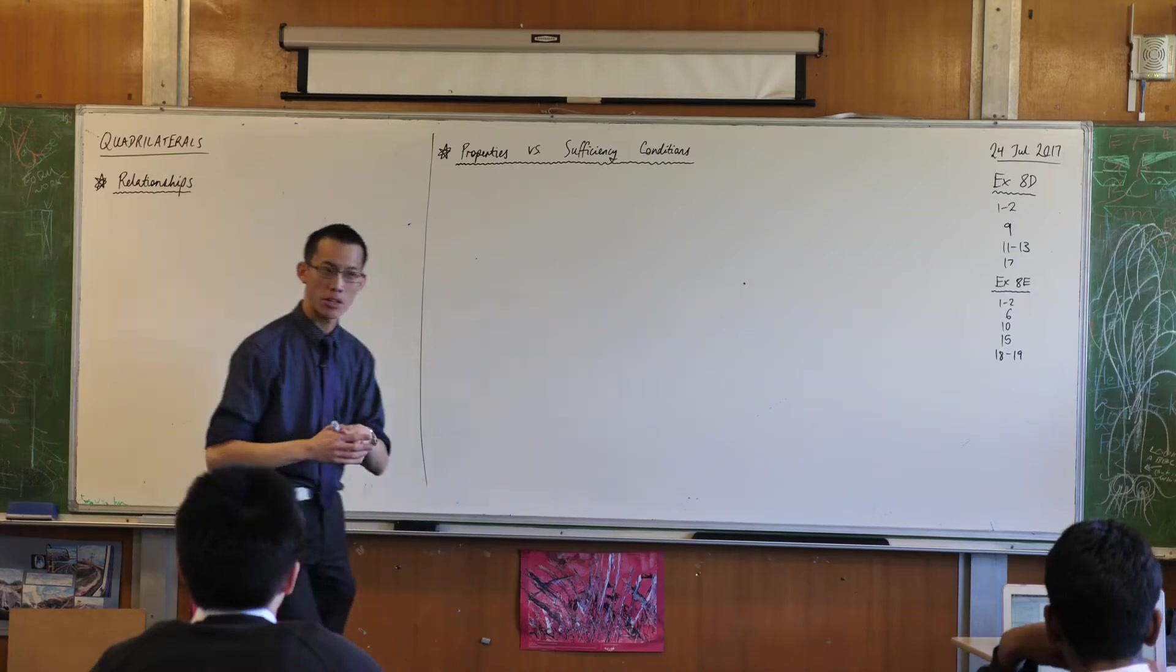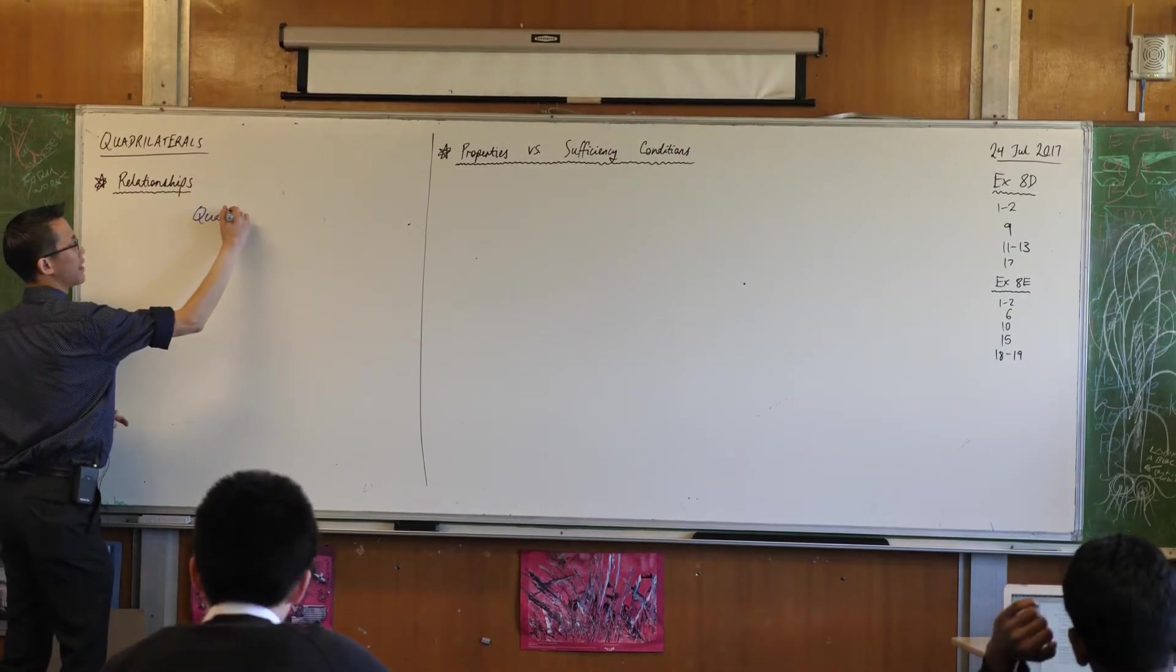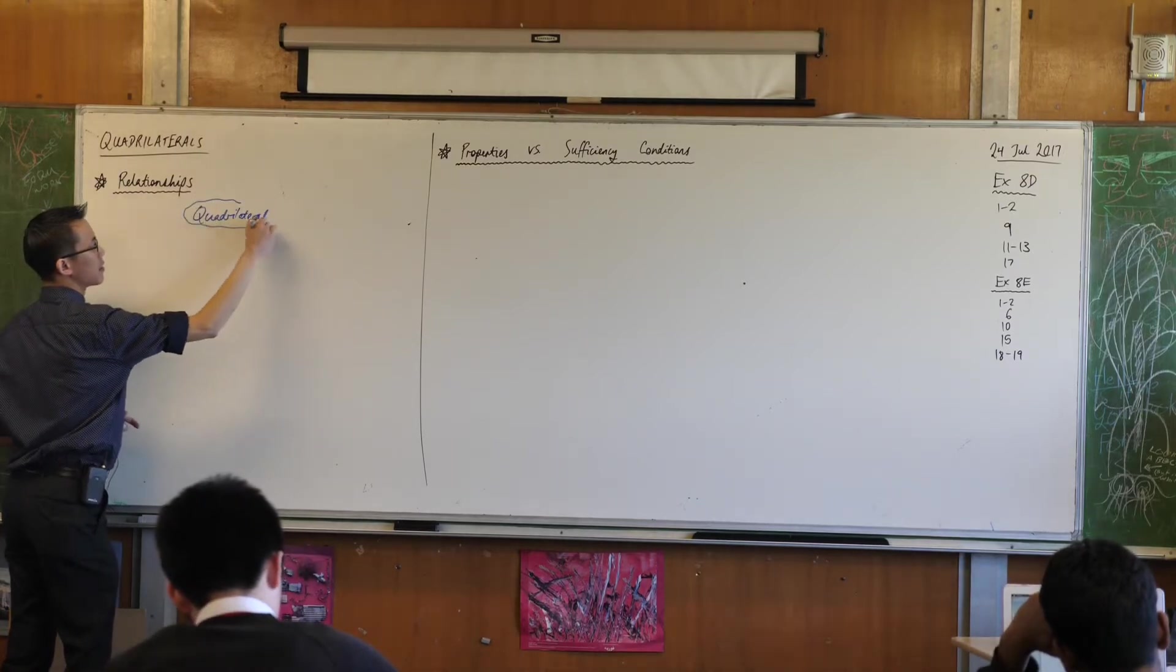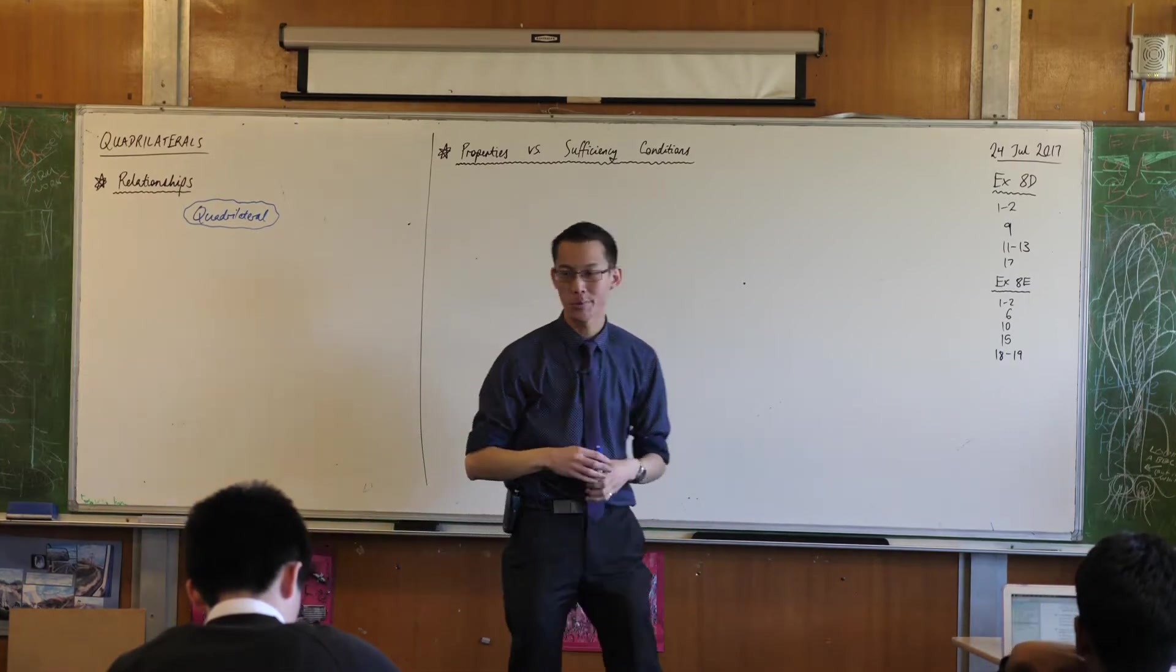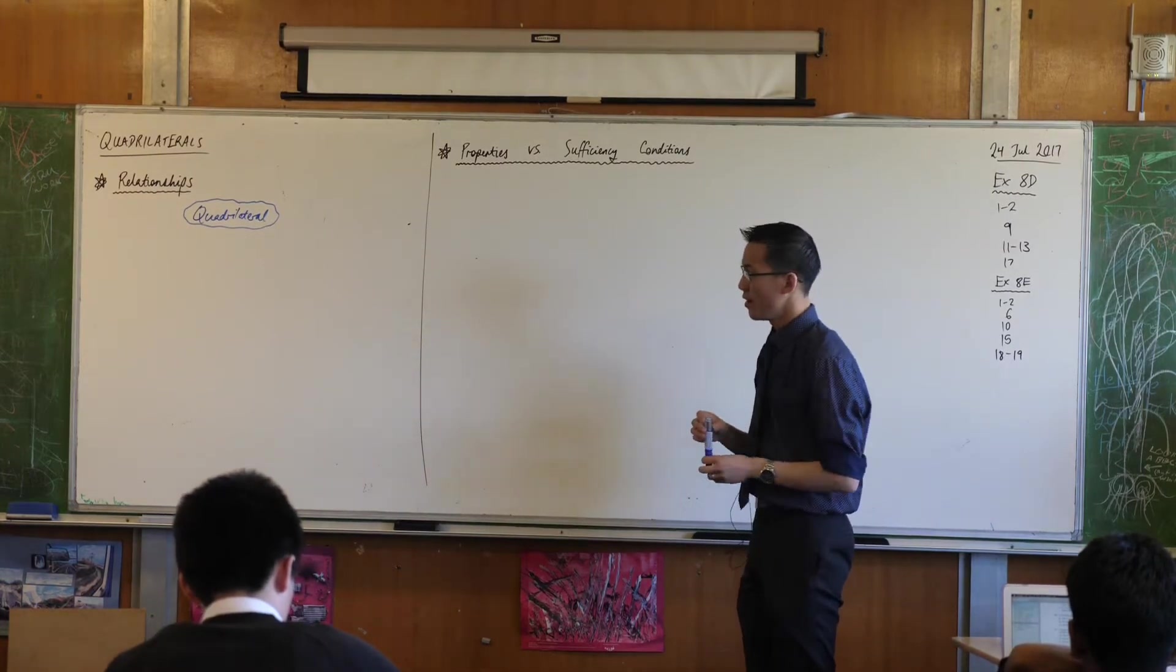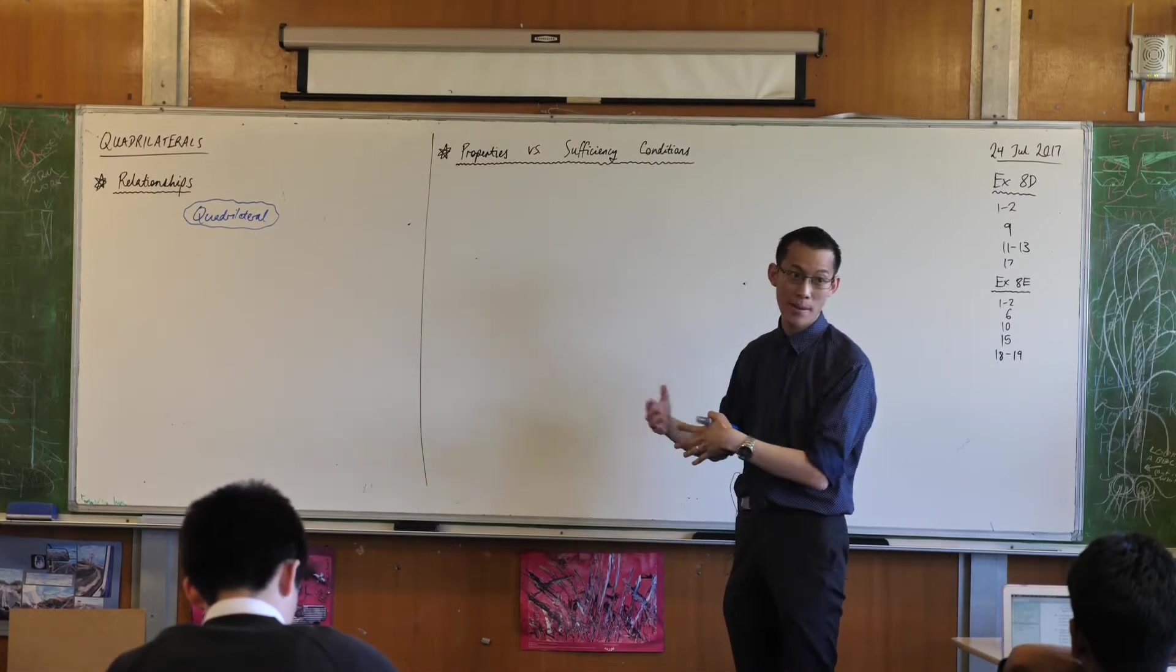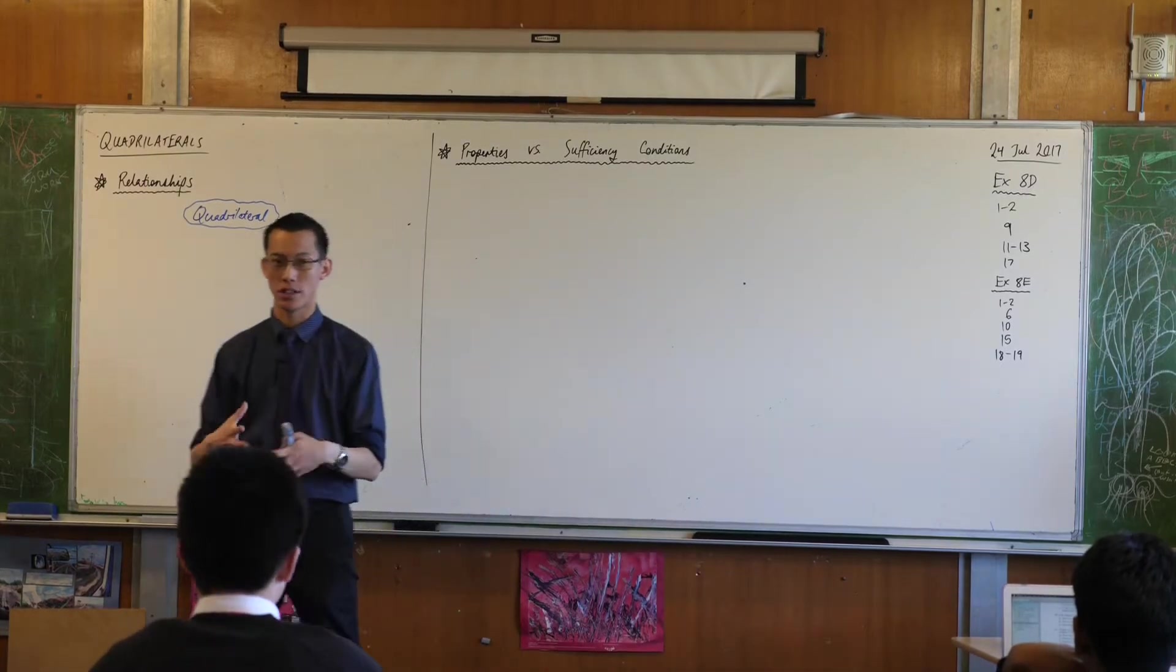So right at the top here I'm going to draw what we call like a family tree. All quadrilaterals are related to each other in some way. If you take any quadrilateral which has no special properties about it, I'm going to add on properties to this shape and I'm going to make the shape more and more specialized.